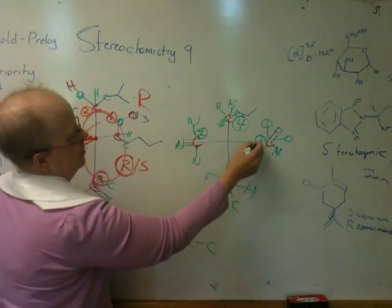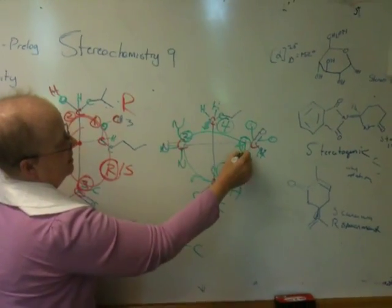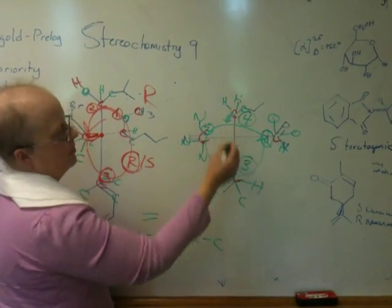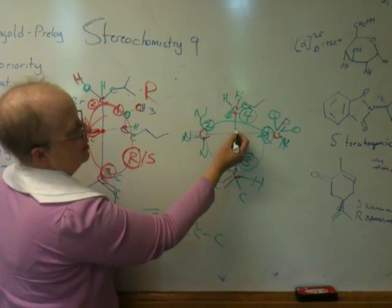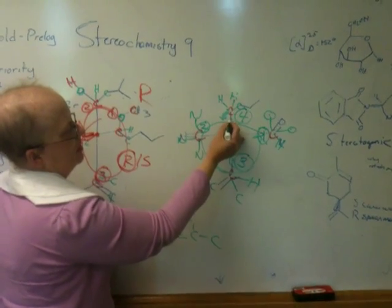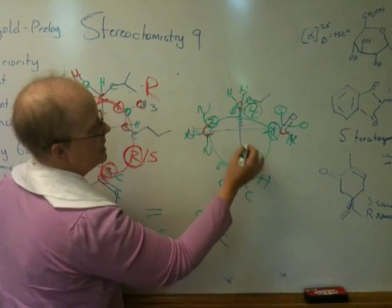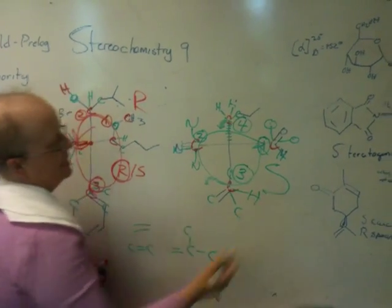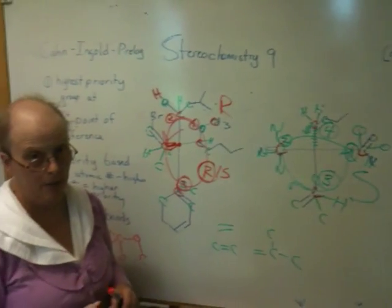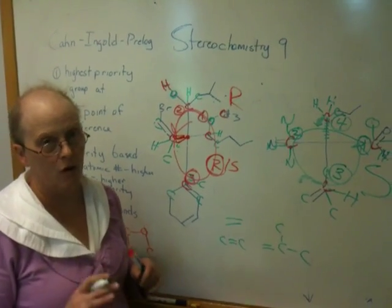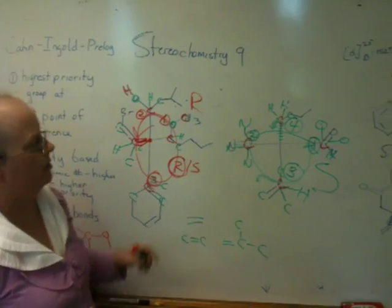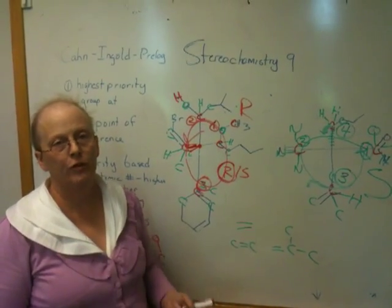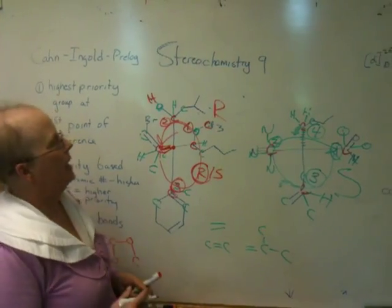So we trace the circle from one to two to three. It's counterclockwise. Where is number four? It's on the vertical. Because it's on the vertical, this is going back. So this, you do not reverse the designation. This is S. This one's S. So that should help you with your assigning. That kind of goes over all the little problems. Never just look at a group and say because it's bigger, it's higher priority. It's first point of difference. That's it.